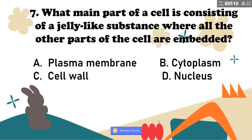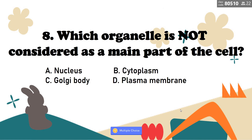Number 7: What main part of the cell is consisting of a jelly-like substance where all the other parts of the cell are embedded? A, plasma membrane; B, cytoplasm; C, cell wall; D, nucleus. Very good — it is called cytoplasm, letter B.